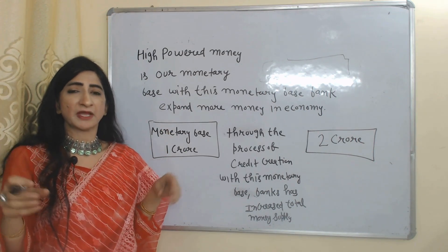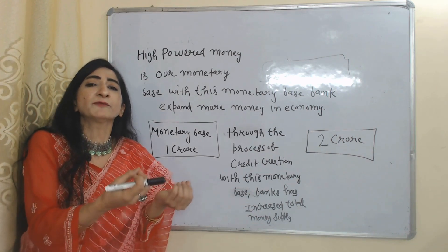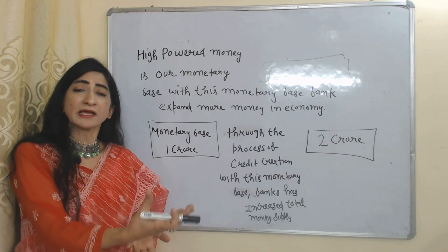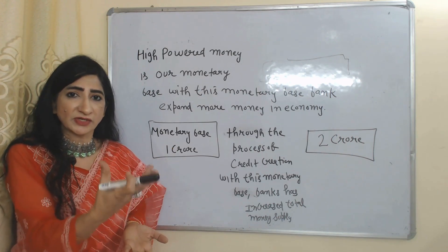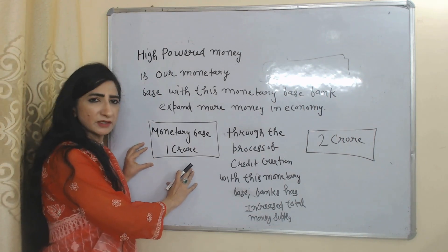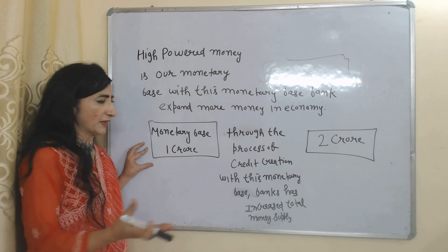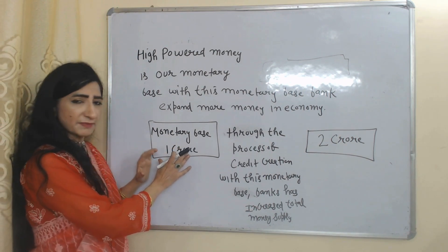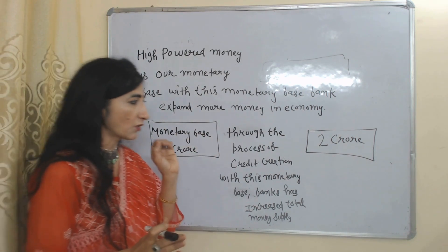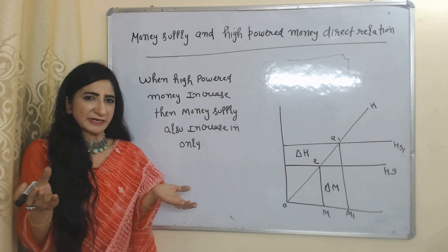High powered money is our monetary base. With the help of this monetary base, banks expand more money in the economy through the process of credit creation. As we know, banks give loans to people and earn interest, which increases the money supply. For example, suppose our monetary base is one crore — this is the actual money issued by the central bank or government — and through credit creation, the bank increases total money supply to two crore.